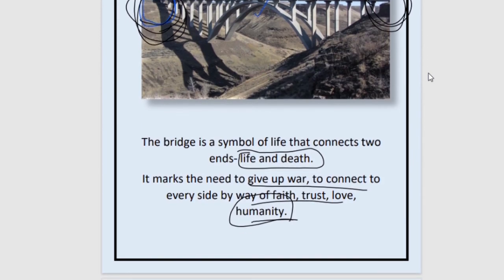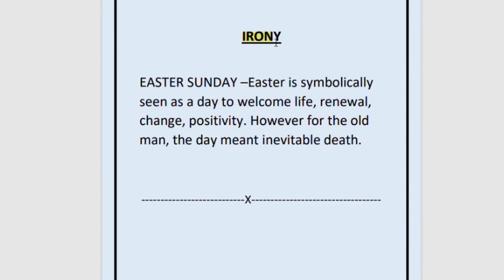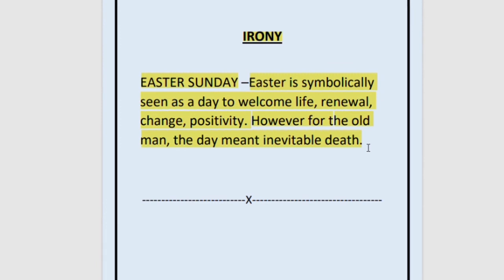Next, irony. Easter Sunday marks the day when Christ returned three days after his crucifixion — it is a symbol of welcoming life, renewal, change, and positivity. But on this same day, we see the old man waiting for his inevitable death. It is ironical that on this particular day an innocent man loses his life. That is all from this chapter — we have discussed all the symbols, ideas, and themes associated with the story. We will move on to the questions in the next class. Thank you so much, children. If you liked the video, please like and subscribe.